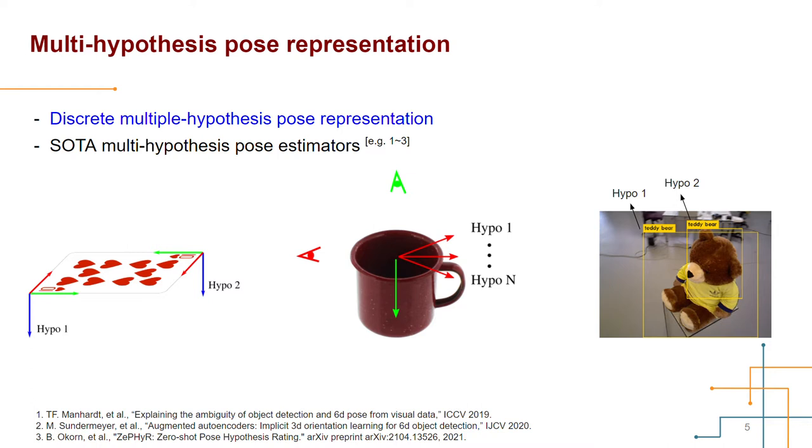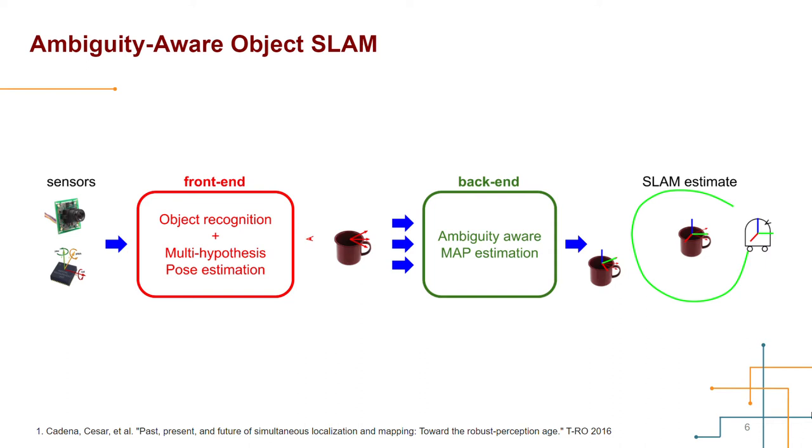This is the pipeline for the ambiguity-aware object SLAM. It has the front-end and the back-end. The front-end takes sensor data, makes multi-hypothesis object pose measurements, and feeds them into the back-end. The back-end performs multimodal probabilistic inference to gradually recover the robot and object poses. The back-end should be able to keep track of the multiple pose hypotheses and later disambiguate them, so we can have a globally consistent world representation.